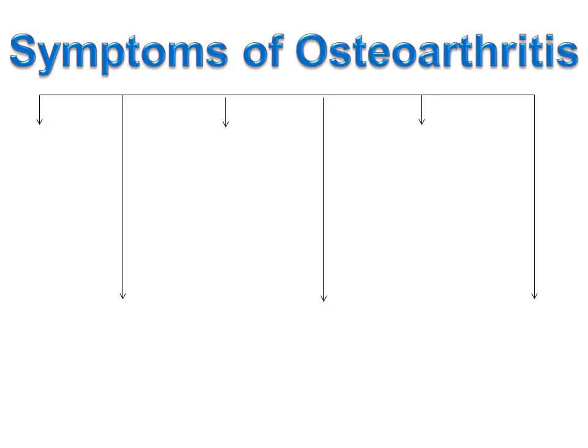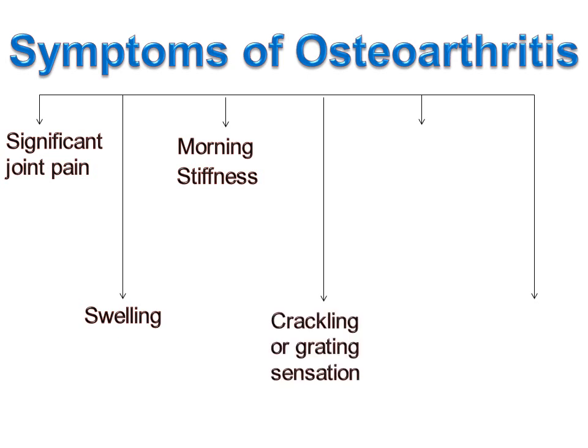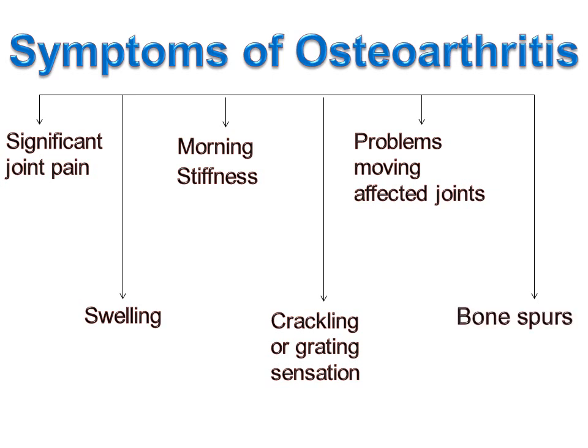Osteoarthritis symptoms often develop slowly and worsen over time. The symptoms are significant joint pain along with swelling and stiffness. As this stiffness is experienced more when the person gets up in the morning, it is often referred to as morning stiffness. A person with osteoarthritis might hear crackling or feel a grating sensation while using affected joints. They may also have problems moving the affected joints. Additionally, there are extra bits of bone — bone spurs — which form and feel like hard lumps around the affected joints.